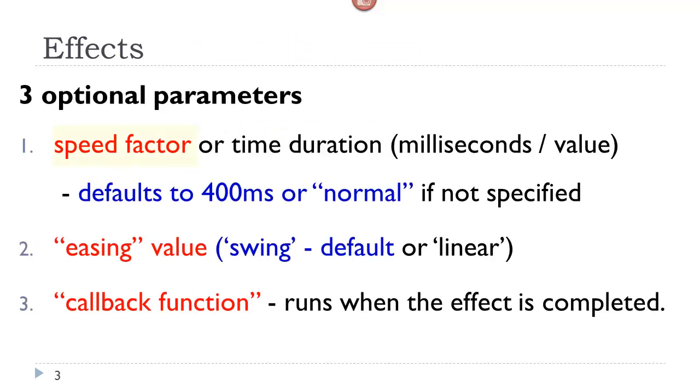Effects take three optional parameters. The speed factor, or time, with which the effect will occur. An easing value, which determines how it proceeds. And an optional callback function, which will run after the effect is completed.